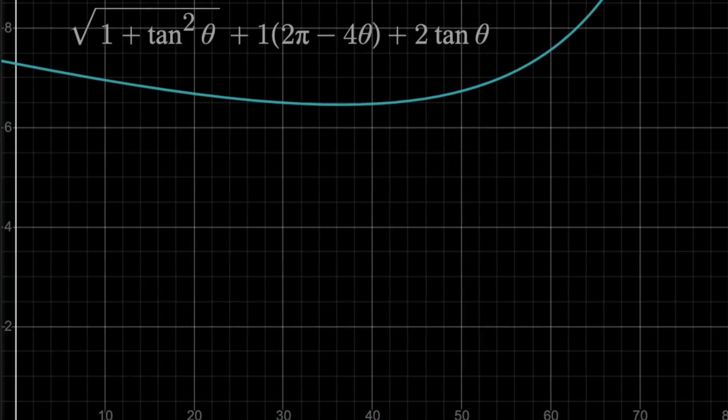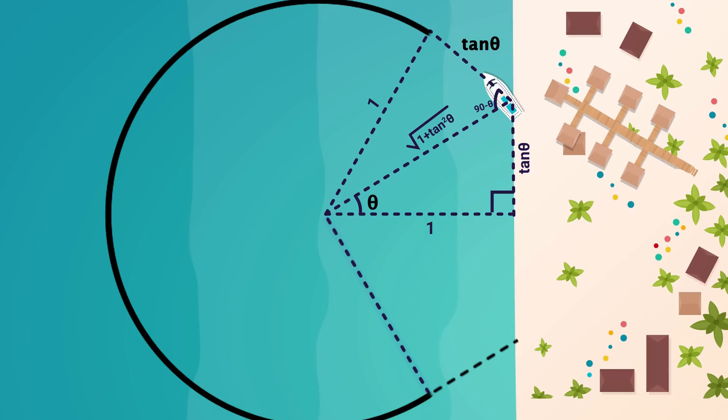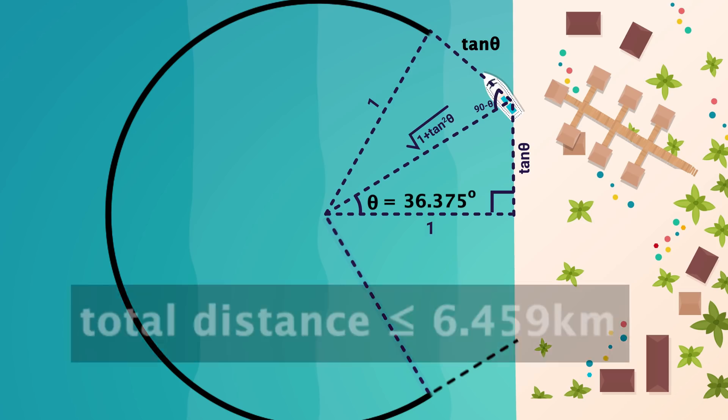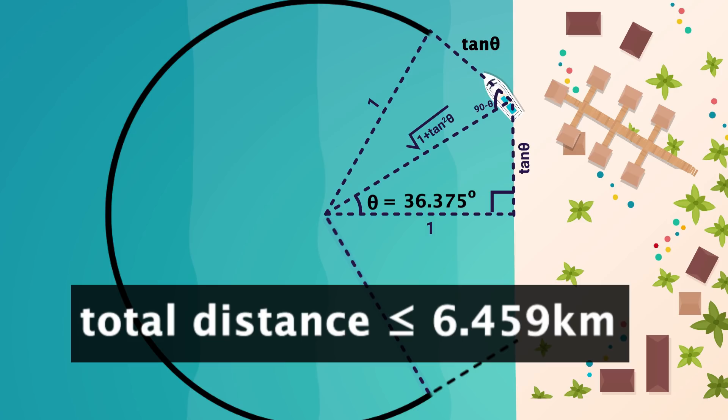Plotting this equation gives us this graph here, and the minimum appears at 36.375 degrees, 6.459 kilometers. So if you do exactly what we just went over, but make that initial angle 36.375 degrees, you will drive no more than 6.459 kilometers, which is over half a kilometer improvement from the last method.